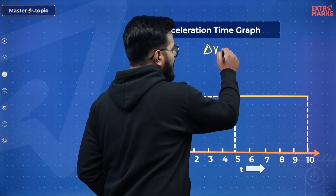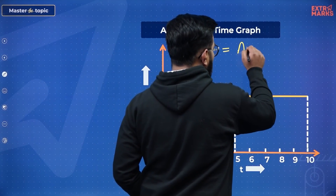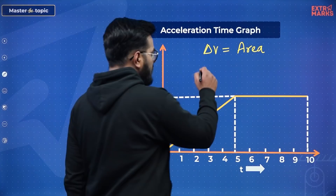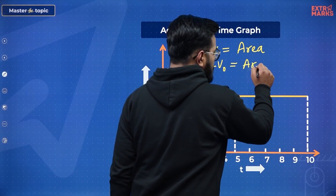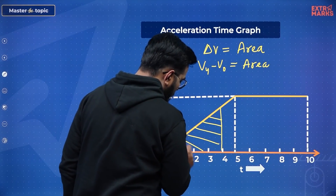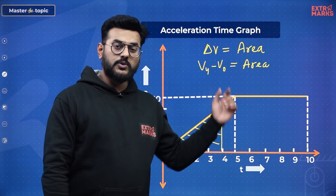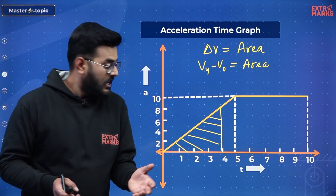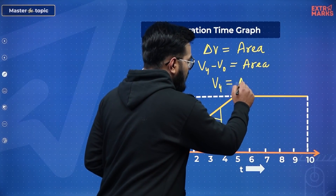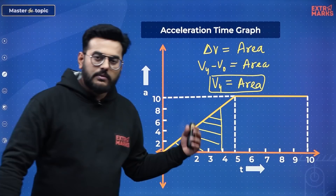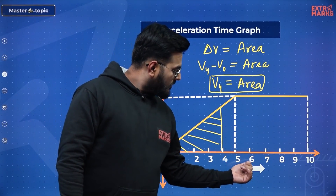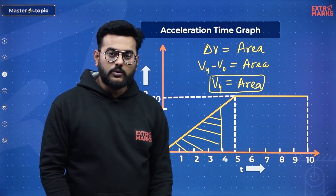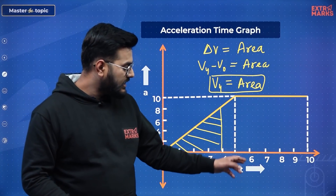If I want the change in velocity between the 4th second and 0, I calculate the shaded area, giving V4 − V0. Since the initial velocity was 0, V0 = 0, so the area directly equals the velocity at T = 4. Similarly, to find velocity at T = 6 or T = 8, I just calculate the area from T = 0 to that time. In this manner I can individually find velocity values at every second.